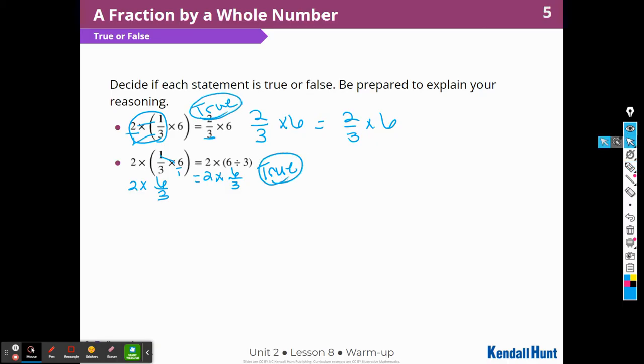I'm going to have to erase some of my work here. There we go, so we can see it. There we go. So now we have 2/3 times 6 equals 2 times 1/4 times 6.